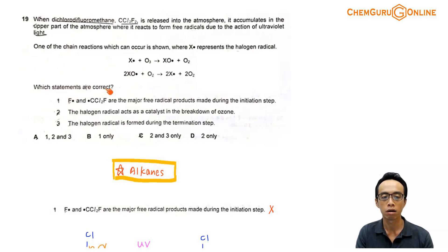So which statements are correct? Statement number 1, F dot and dot CCl2F are the major free radical products made during the initiation step. Statement number 2, the halogen radical acts as a catalyst in the breakdown of ozone. Statement number 3, the halogen radical is formed during the termination step. So we want to run through each of these options and see which statements are correct and we can answer this question 19.